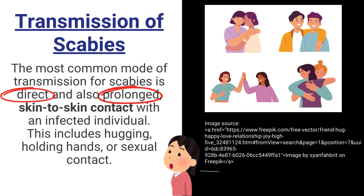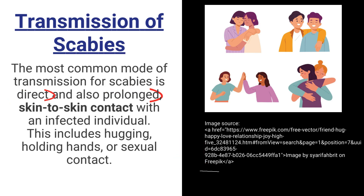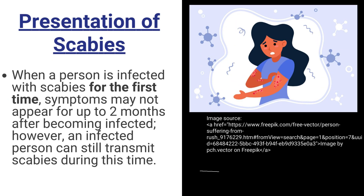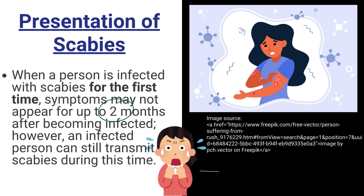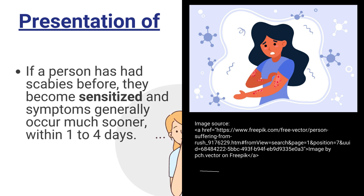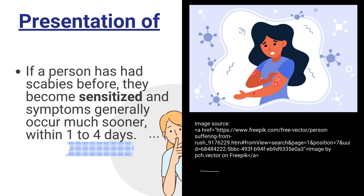Transmission includes acts like hugging, holding hands, or sexual contact. When a person is infected with scabies for the first time, symptoms may not appear for up to two months after becoming infected. However, an infected person can still transmit scabies during this time. If a person has had scabies before, they become sensitized and symptoms generally occur much sooner.